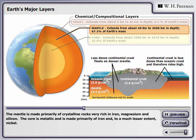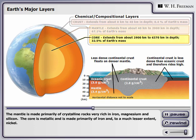The mantle is made primarily of crystalline rocks very rich in iron, magnesium, and silicon. The core is metallic and is made primarily of iron and, to a much lesser extent, nickel.